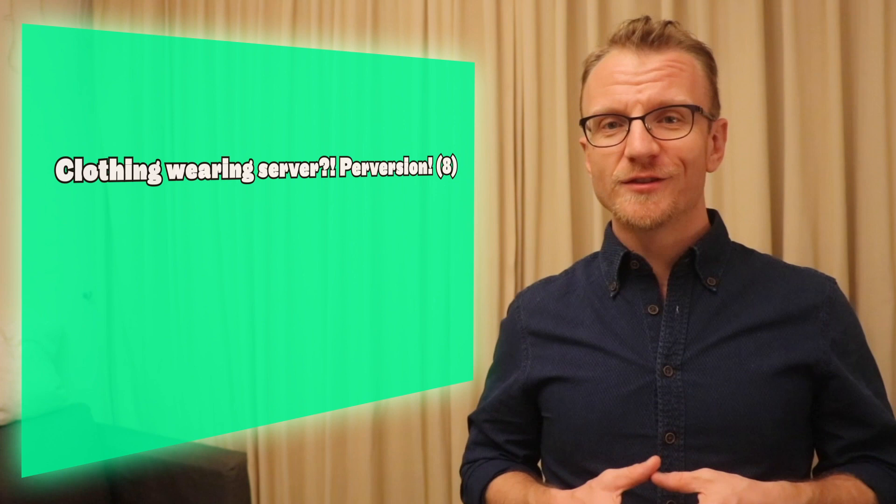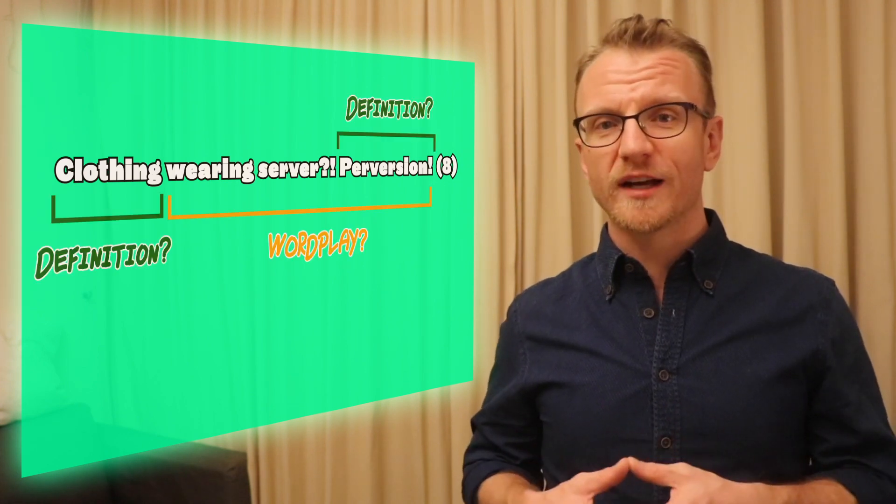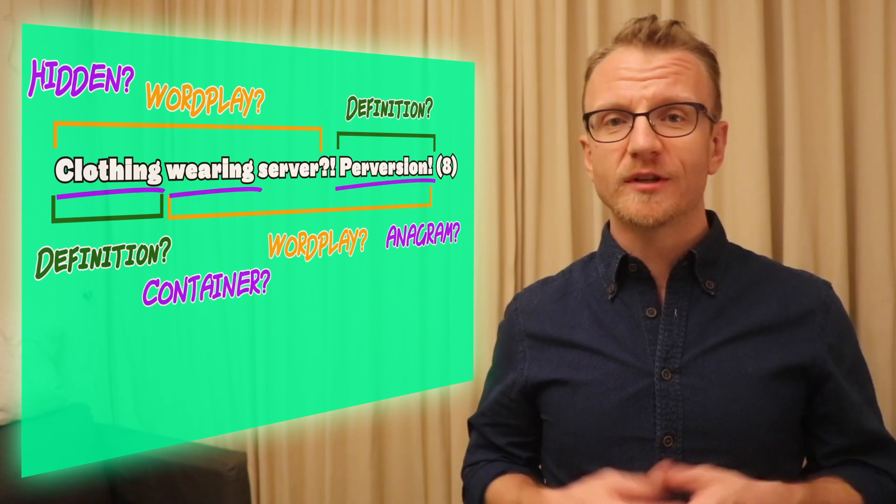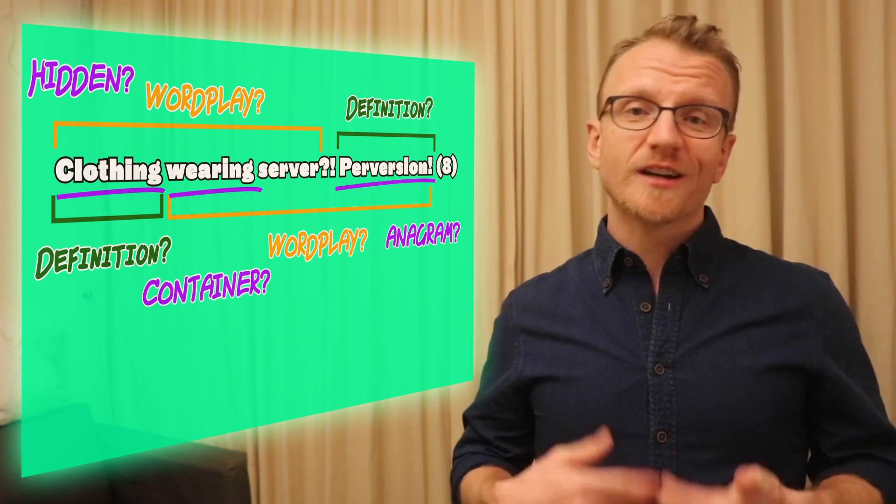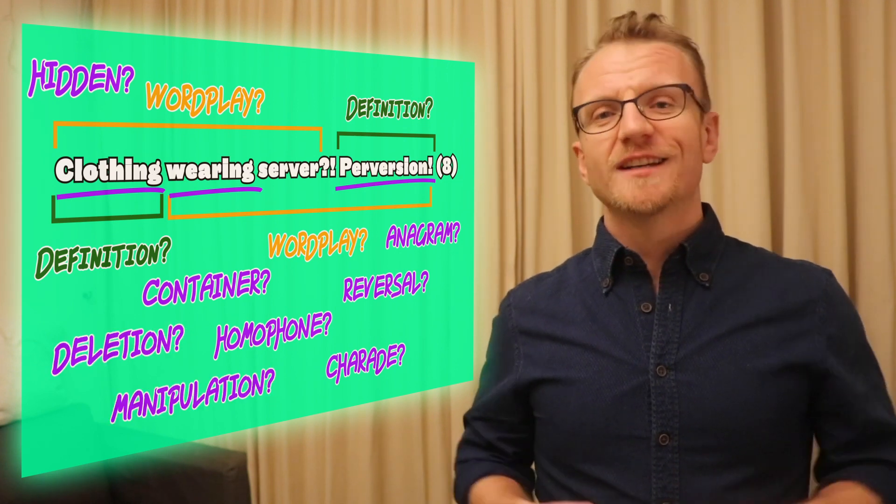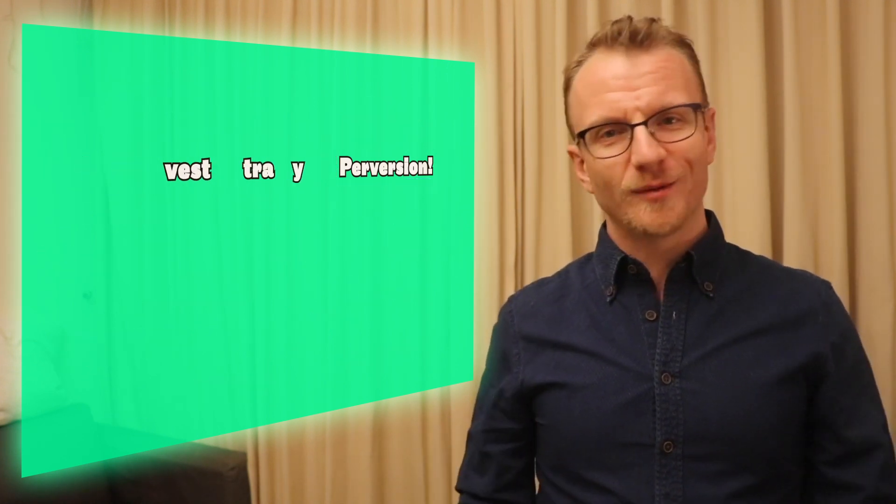To find out what kind of clue type it is, you have to separate the definition from the word play, and to help with that you spot a signpost in the word play that'll tell you how to manipulate your fodder. And you'll know what kind of signpost to look out for as long as you know that this clue type exists. So if you know how to solve the clue, you'll be able to solve the clue.